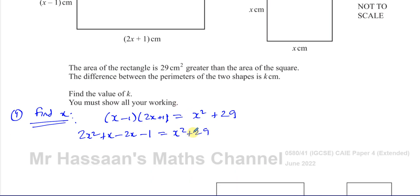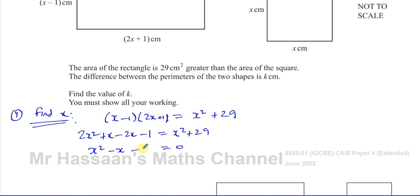I can use the zero product property because I have a quadratic here. I'll bring everything to one side and make it equal zero. Subtracting X squared from both sides gives 2X squared minus X squared, which is X squared. Then X minus 2X is minus X. And minus 1 minus 29 is minus 30, equals zero.